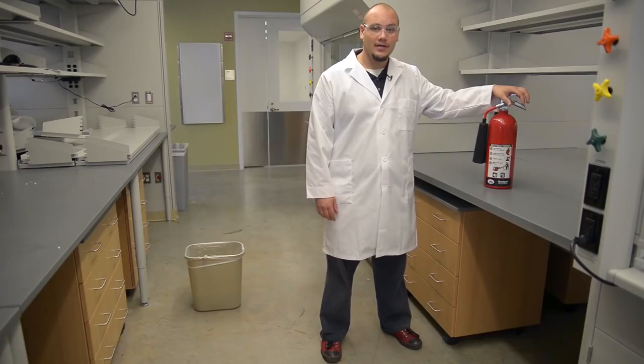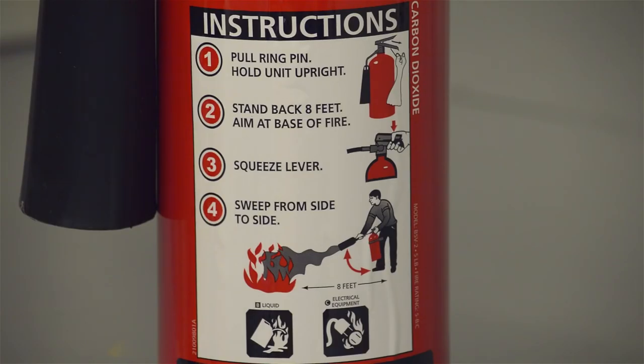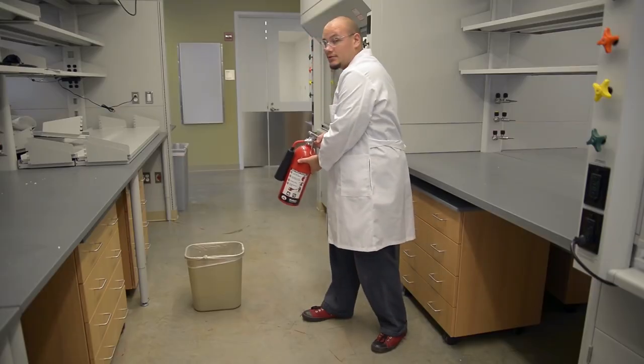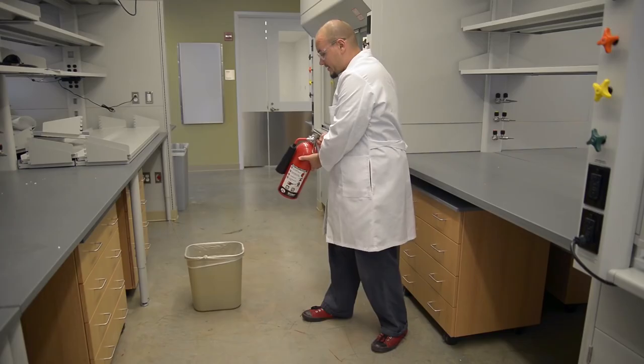If there's a small fire in the lab, you can use the fire extinguisher to put it out. Just follow the instructions on the side and remember the acronym PASS: Pull the pin, aim the nozzle, squeeze the trigger, and sweep from side to side.